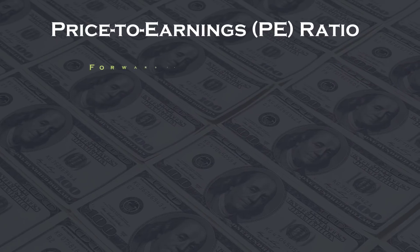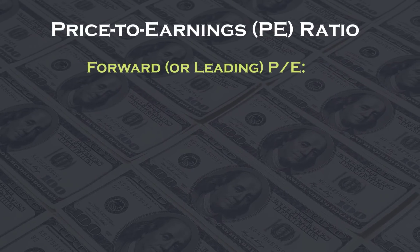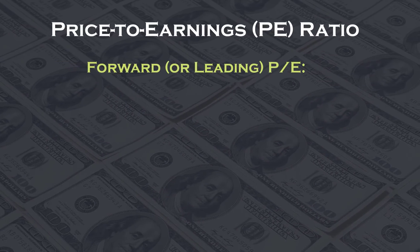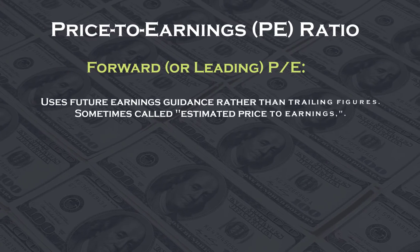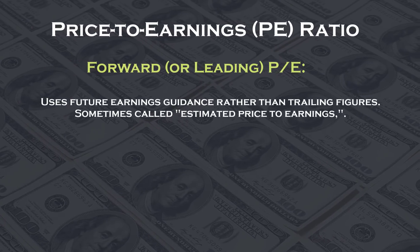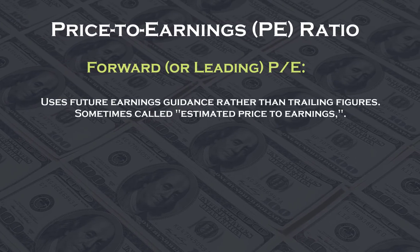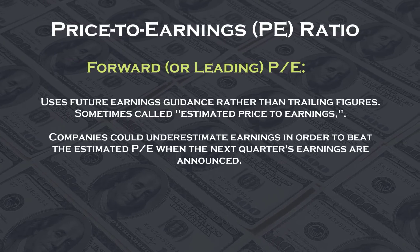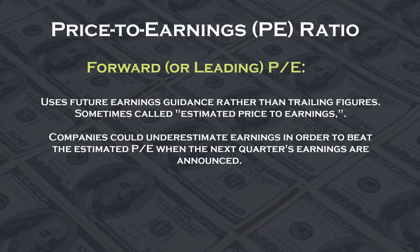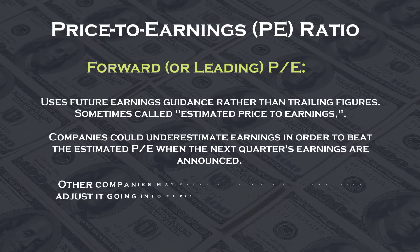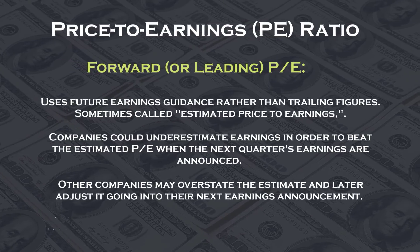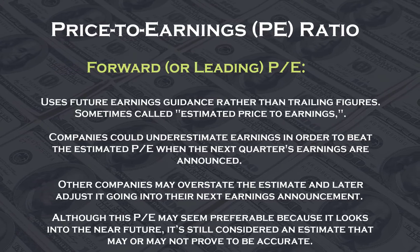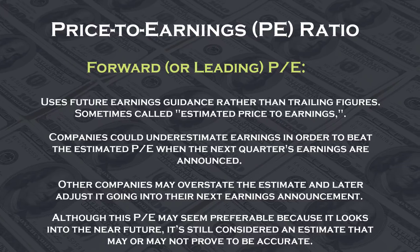Secondly, we have the forward PE ratio. The forward, or leading, PE ratio uses future earnings guidance rather than trailing figures, sometimes called estimated price to earnings. This forward-looking indicator is useful for comparing current earnings to future earnings and helps provide a clearer picture of what earnings will look like. However, there are also problems with the forward PE metric. Companies could underestimate earnings in order to beat the estimated PE when the next quarter's earnings are announced.